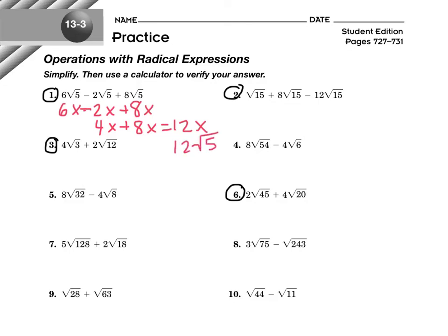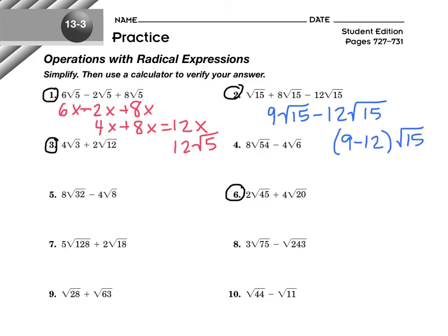Next one: can you simplify root 15? 15 is 3 times 5 — neither is a perfect square, so we can't simplify it. So we just add: root 15 plus 8 root 15 is 9 root 15, minus 12 root 15. That gives us 9 minus 12 root 15, which is negative 3 root 15.